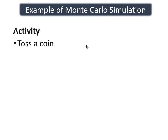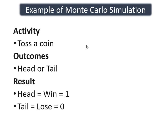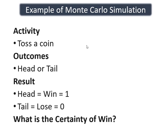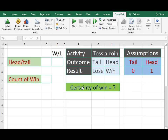Now let's conduct an experiment as an example of Monte Carlo simulation. Let's take the activity of tossing a coin. There are two outcomes: either a head or a tail. If head comes, we win, denoted by numerical value 1. If tail comes, we lose, denoted by numerical value 0. Our objective is to calculate the certainty of a win. We will develop a model in MS Excel and conduct a Monte Carlo simulation to obtain our result. Here, I have prepared an Excel sheet to conduct the analysis. The activity is tossing a coin, outcomes are head or tail, and results are win or lose. Our assumptions are numerical value 1 for head or win and 0 for tail or lose.